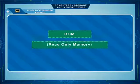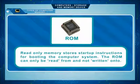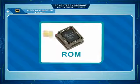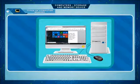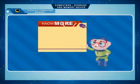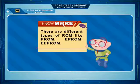Read Only Memory (ROM) stores start-up instructions for booting the computer system. The ROM can only be read from and not written onto. Information is permanently stored on ROM and cannot be changed. The contents are not lost when you turn off the computer, making it a non-volatile memory. There are different types of ROM, such as PROM, EPROM, and EEPROM.